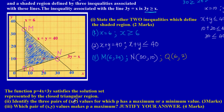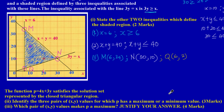We've identified the three pairs of x and y values for which p has a maximum or minimum value. What they mean is: based on the equation p = 4x + 3y, the pair of x and y values that gives the highest result when substituted into the formula is the maximum value, and the pair that gives the lowest result is the minimum value.